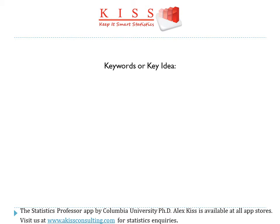The key words or key idea behind this test are: the data has to be coming from a normal distribution, and the samples are dependent, meaning they're related to one another. A classic example is when you give a test to a group of subjects before some program to measure their ability, and then give them the test after the program. So while we have two samples, the fact that they're the same group measured twice shows that they're related or dependent. This key point differentiates this test from the independent sample t-test, in which the two samples aren't related.